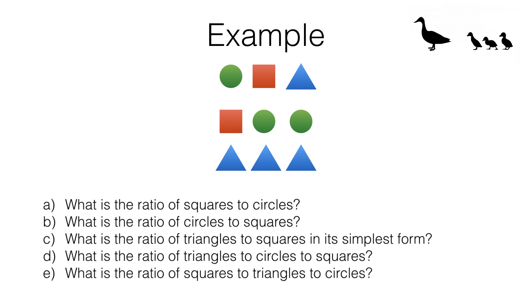Here are the answers. For part A, the ratio of squares to circles is simply 2 to 3. There are two squares and three circles so the ratio of squares to circles is 2 to 3.